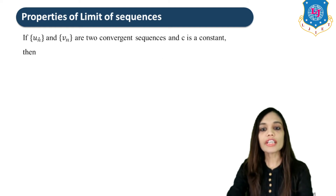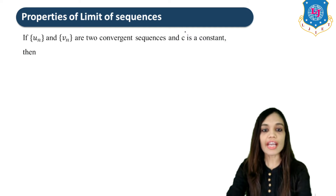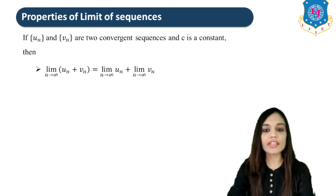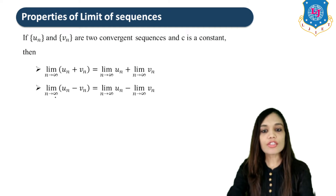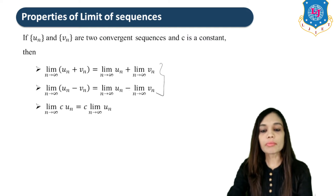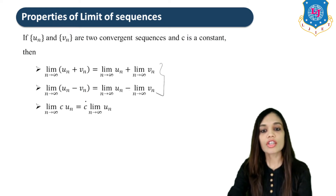Now let us study the properties of limits of sequences. If {UN} and {VN} are convergent sequences and C is a constant, then: lim(UN + VN) = lim UN + lim VN; lim(UN − VN) = lim UN − lim VN, so you can separate the terms. Also, lim(C·UN) = C · lim UN, since C is constant and can be taken outside.